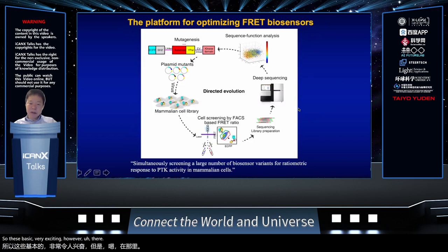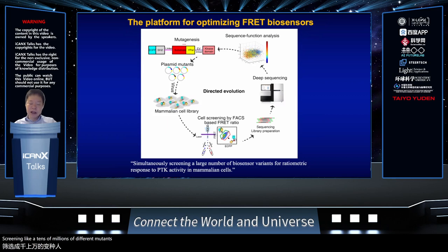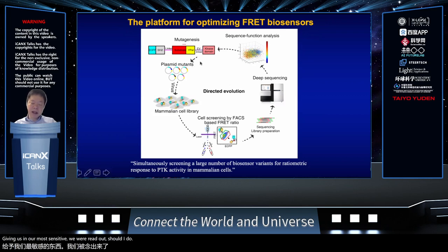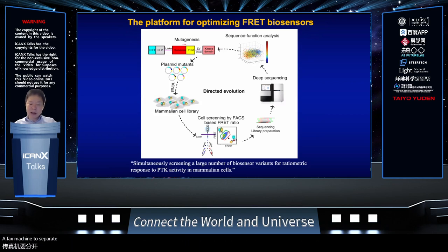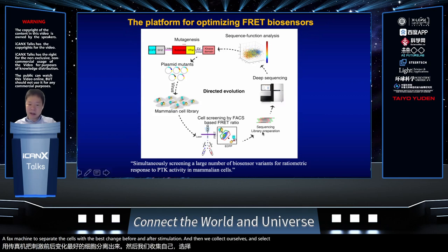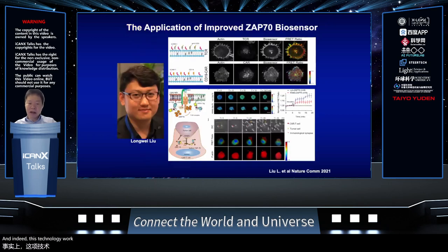However, one weakness is that the sensitivity of this biosensor is typically not that good — only around 10–20%. So we recently developed a new platform using library screening of tens of millions of different mutants to select the best biosensor giving the most sensitive readout. We create a biosensor library, put it into mammalian cells, then use a FACS machine to separate cells with the best change before and after stimulation. We collect those cells, extract the genomic material, send it for sequencing, and identify which biosensor mutant gave the best change. This technology worked, and we can now improve the sensitivity of the ZAP70 FRET biosensor several-fold.